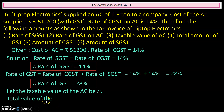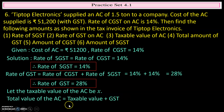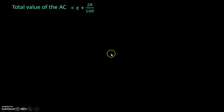The total value of the AC equals the taxable value plus GST. So total value of the AC equals x plus 28 percent of x, which gives us: total value of the AC equals x plus (28/100) × x.